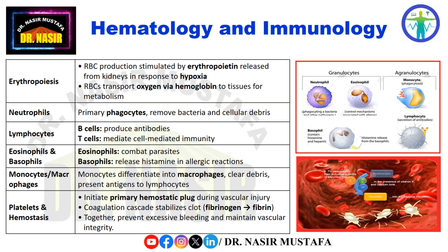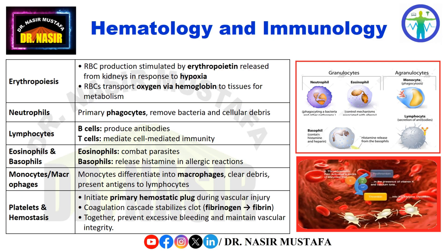Lymphocytes include B-cells, responsible for antibody production, and T-cells, mediating cell-mediated immunity. Eosinophils combat parasites, while basophils release histamine during allergic reactions. Monocytes differentiate into macrophages in tissues, clearing debris and presenting antigens to lymphocytes. Platelets initiate the primary hemostatic plug during vascular injury, and the coagulation cascade subsequently stabilizes the clot by converting fibrinogen into fibrin, preventing excessive bleeding and maintaining vascular integrity.